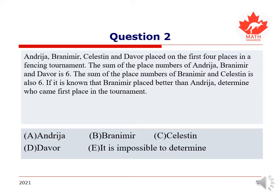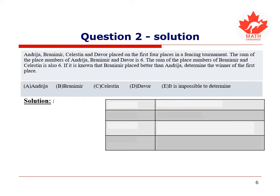We have a Andrea, b Bronimir, c Celestin, d Dava, or e where it is impossible to determine who came first. To make this question easier, we introduce the notations. For a, Andrea's place, b for Bronimir's place, c for Celestin's place, and d for Dava's place.